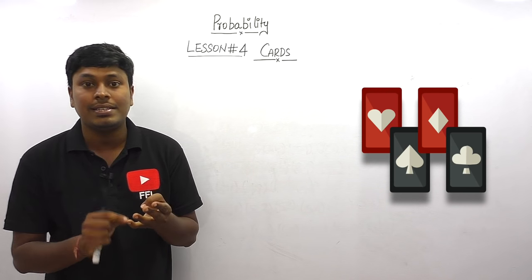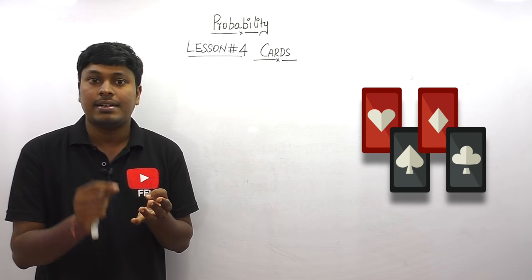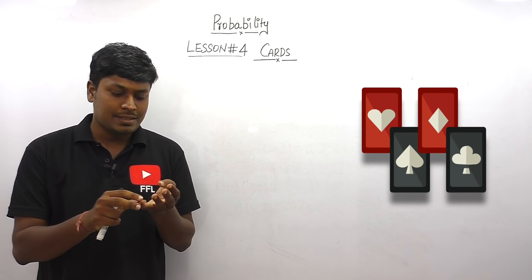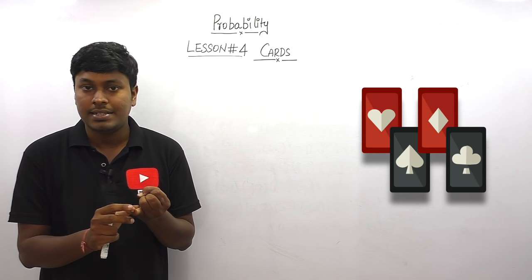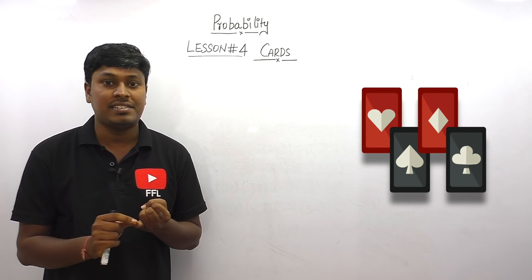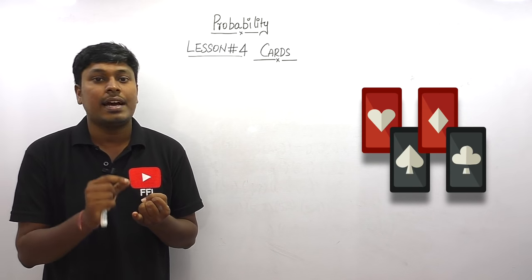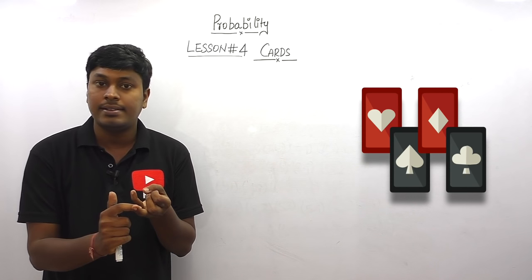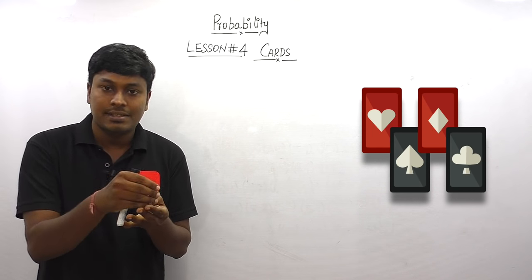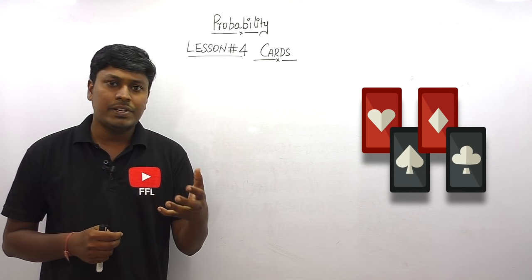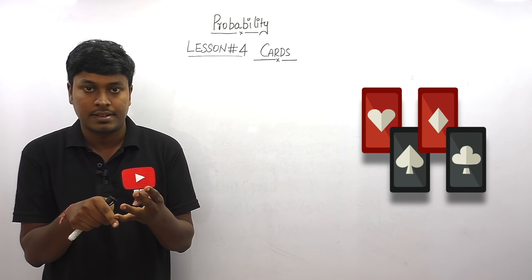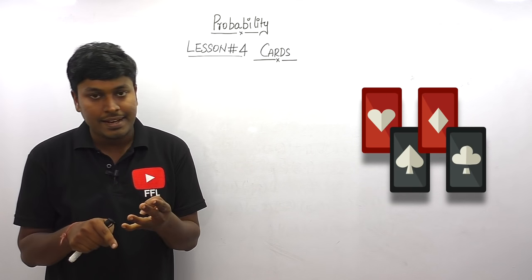Each shape has 13 cards: diamond has 13, heart has 13, club has 13, and spade has 13. Inside these 13 cards, we have numbers starting from 2 to 10, plus ace, jack, king, and queen. Since each shape has one king, totally in the 52 cards we have 4 kings, similarly 4 queens, 4 jacks, and 4 aces.